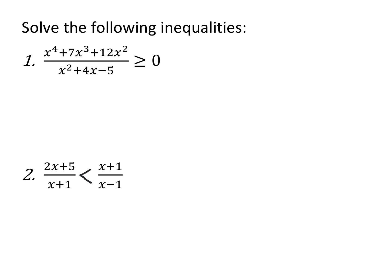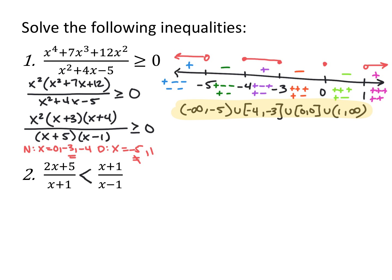Next example: x to the 4th plus 7x cubed plus 12x squared over x squared plus 4x minus 5 is greater than or equal to 0. I factor an x squared GCF out of the numerator, leaving x squared times x squared plus 7x plus 12. Then x squared plus 7x plus 12 factors into x plus 3 times x plus 4, and the denominator factors into x plus 5 times x minus 1. So 0, negative 3, and negative 4 make the numerator 0 — closed circles. Negative 5 and positive 1 make the denominator 0 — always open circles.